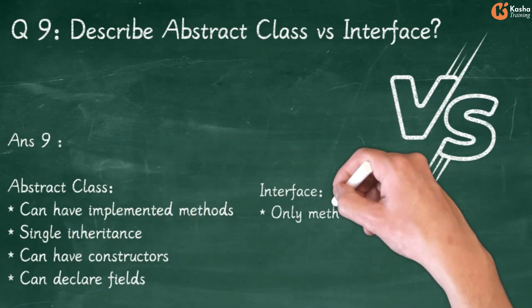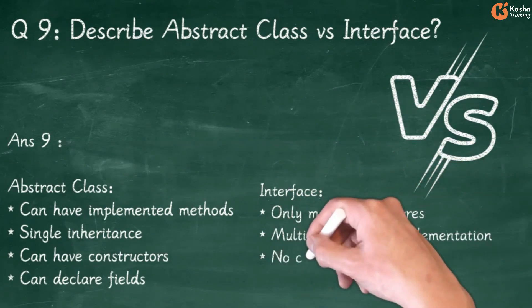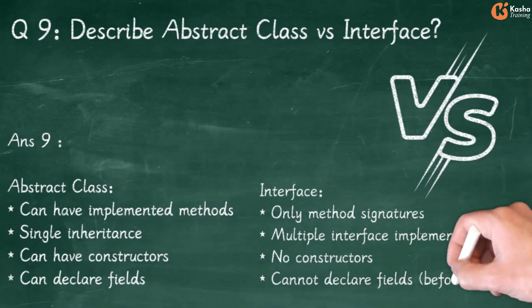Interface has only Method Signatures, supports Multiple Interface Implementation, has No Constructors, and Cannot declare fields before C# 8.0.